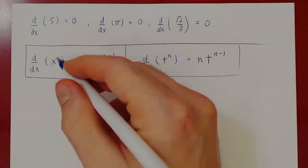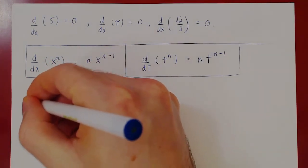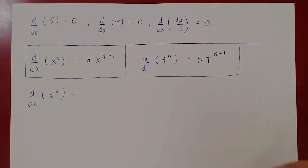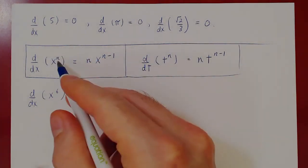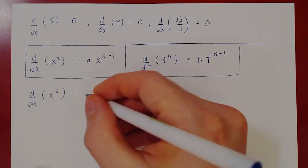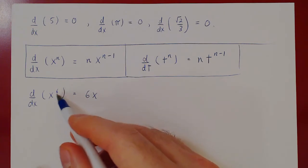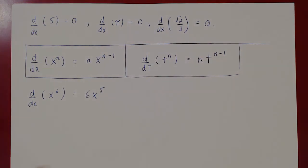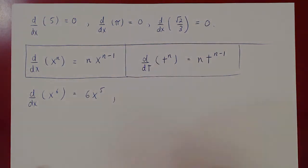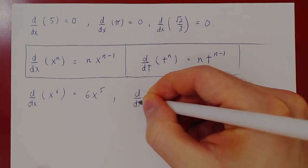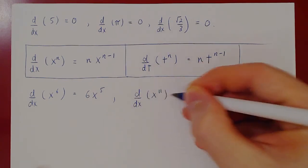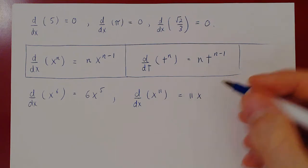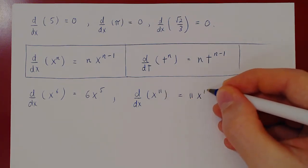Let's look at some examples. What's the derivative of x to the 6th? The power rule says bring the power down — so it's 6 times x to the 6 minus 1, which is 5. So it's just 6x to the 5, no limit needed. What's the derivative of x to the 11? Bring 11 down, times x to the 11 minus 1, which is 10. So it's 11x to the 10.